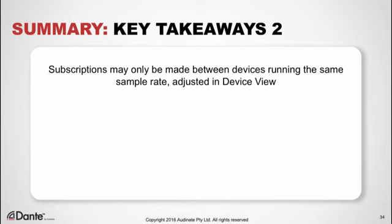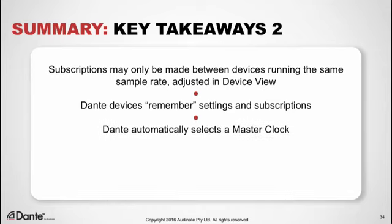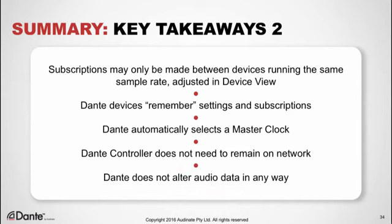Subscriptions may only be made between devices running at the same sample rate and bit depth, and sample rate and encoding are adjustable within manufacturer's limits in the device view. All Dante devices remember settings and subscriptions, and automatically re-establish them upon power cycle or reconnection. Dante automatically selects a master clock from among the connected devices — there is usually no reason to change this. You don't need Dante Controller running on the network once your settings are in place. Dante does not alter audio data in any way — it is a pure bit-for-bit audio transport system.